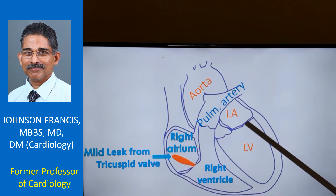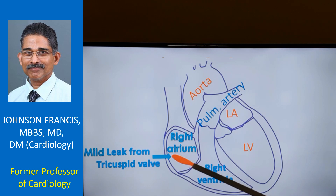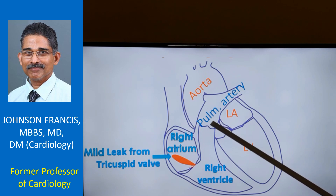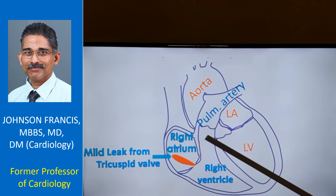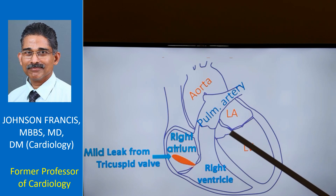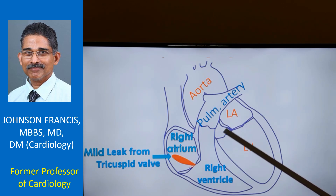Unlike the valves on the left side like the mitral and aortic, right-sided valves can have some leak — that is, in the right atrium there can be some back flow from the right ventricle, which is known as mild tricuspid regurgitation. Similarly, another right-sided valve is the pulmonary valve, and there could also be some mild leak in the pulmonary valve — both of these can occur in normal persons. Similar leaks on the left side are less common; mild mitral regurgitation and mild aortic regurgitation are less frequent.